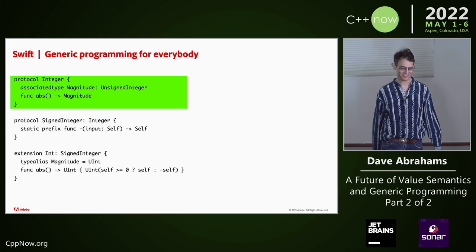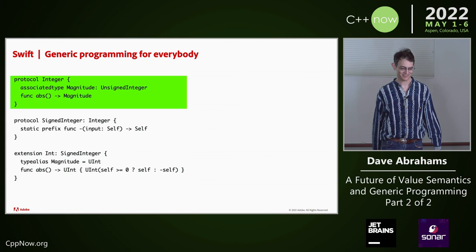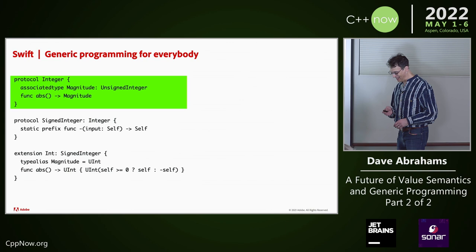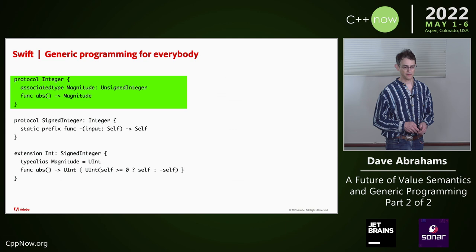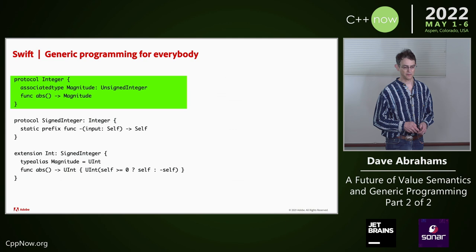We can't have nice things in C++. We'll do it differently from every other language. So this is what some generic programming looks like in Swift. I'm going to take you through a cursory tour through the major features. This is an integer protocol — a protocol is just Swift's name for a concept. Whatever you put in the body of your protocol, those main declarations are the customization points you get with that protocol.